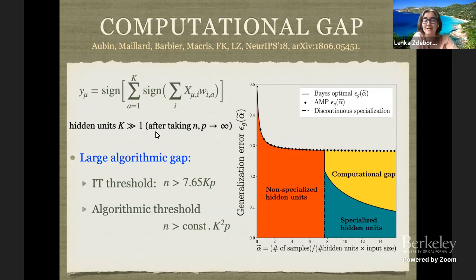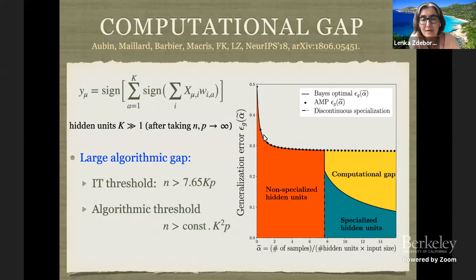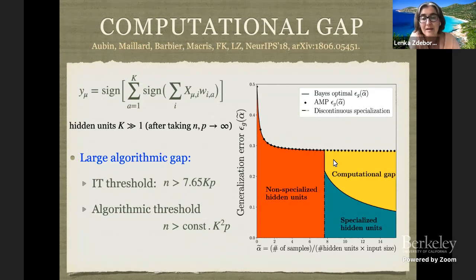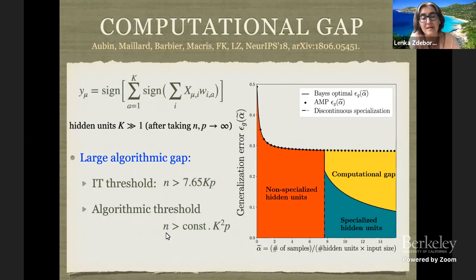When K is large — but after the number of samples and the dimension are sent to infinity — we can get some insight from the replica formula again. Using a teacher of this form and plotting the generalization error as a function of samples divided by dimension, the optimal error follows the full black line. Algorithmically, we can write the approximate message passing algorithm. There is a specialization phase transition when the number of samples is about 7.6 times the number of hidden units times the dimension information-theoretically, but algorithmically we only see it when the sample complexity scales with the square of the number of hidden units.